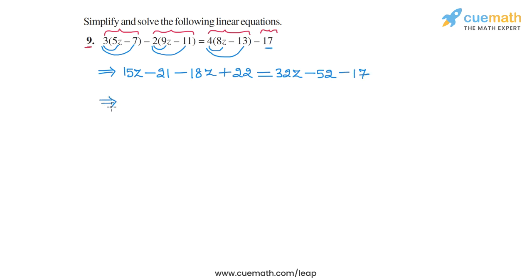Now let's combine the variable terms on the LHS. We have 15z and minus 18z, so this will give us minus 3z. And also we can combine the constant terms minus 21 and plus 22, this will give us plus 1. So we get minus 3z plus 1 on the left hand side.